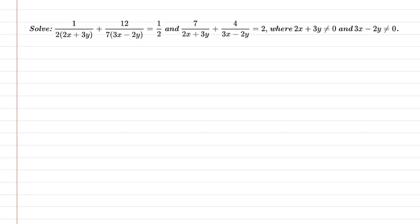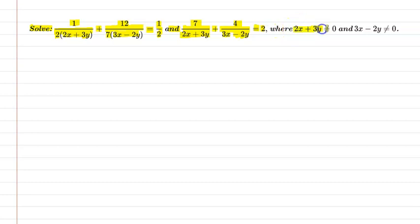Hello students. First of all let us understand the question. The question is: solve 1 upon 2 into (2x + 3y) plus 12 upon 7 into (3x − 2y) equal to 1 upon 2, and 7 upon (2x + 3y) plus 4 upon (3x − 2y) equal to 2, where 2x + 3y is not equal to 0 and 3x − 2y is not equal to 0.